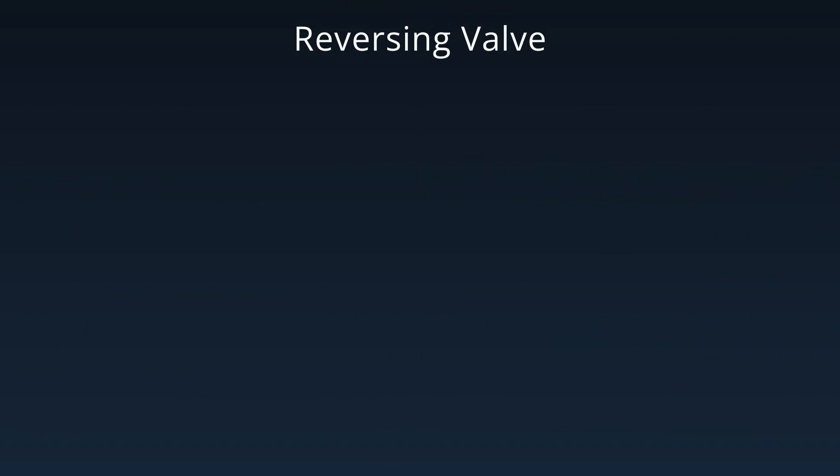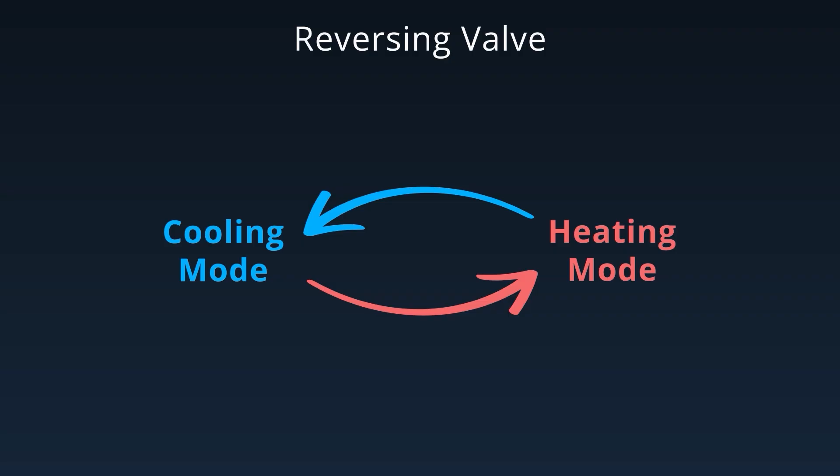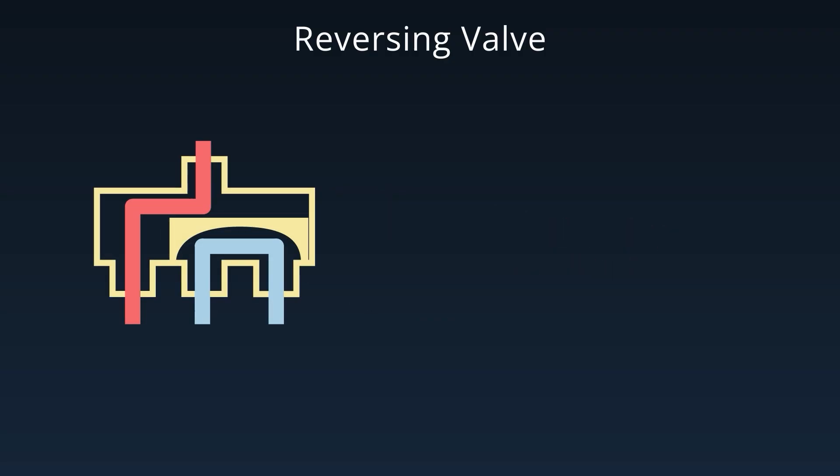Most modern systems can switch between cooling mode and heat pump mode. But how do they do that? The answer is with a reversing valve, a four-way valve installed near the compressor.